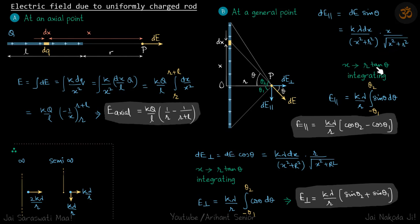So if you substitute x as r tan theta and integrate, so I am not doing the integration here. If you do the substitution, it's a simple one, you will get E parallel is k lambda by r sin theta d theta. Now limits of theta, so we are considering this theta is positive. So limits will be minus theta 1 to plus theta 2, which gives our answer.